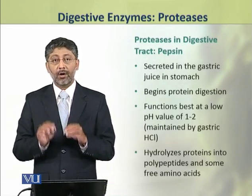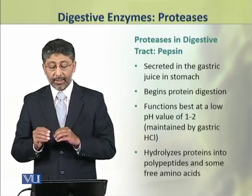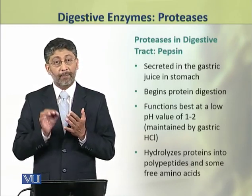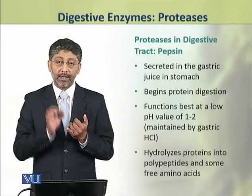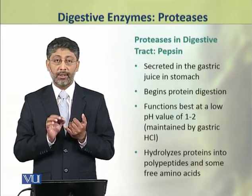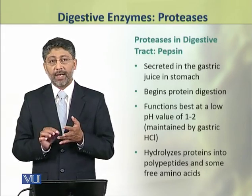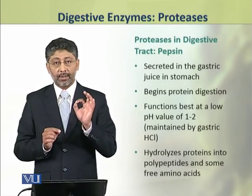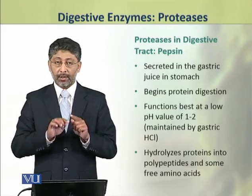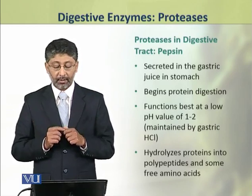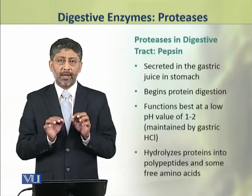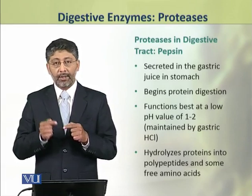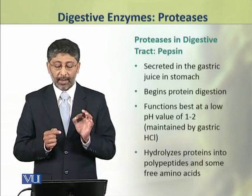We shall now take a few examples of proteases secreted in the digestive juices of the digestive tract. First, pepsin. Pepsin is secreted in the gastric juice in the stomach. It is the enzyme which begins protein digestion. It functions best in an acidic pH ranging between 1 and 2, which is maintained by gastric hydrochloric acid. Pepsin hydrolyzes proteins into polypeptides and a few free amino acids.